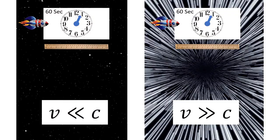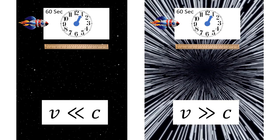As the rocket ship speeds up, the ruler appears to shrink as seen by the twin that remains in the control tower at mission control. I've just discussed relativistic time dilation for a vehicle traveling less than the speed of light. Let's now talk about what happens to time dilation and length contraction for a faster-than-light vehicle.